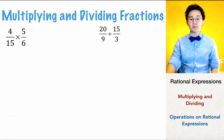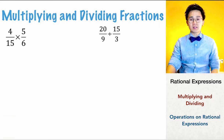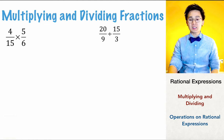We have 4 over 15 times 5 over 6. When we multiply these two fractions, instead of directly multiplying 4 and 5 and 15 and 6, we're going to factor out those numbers and use the cancellation technique.